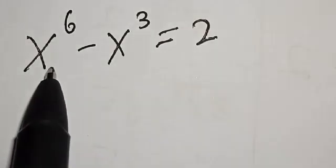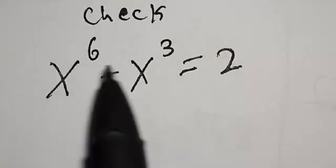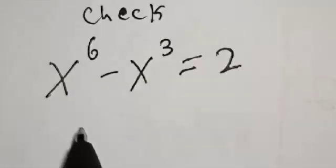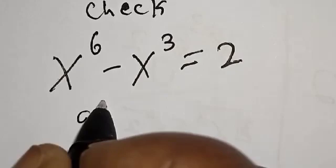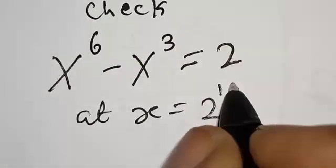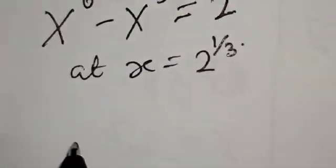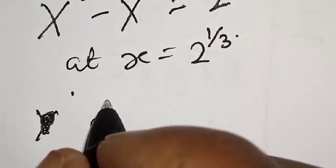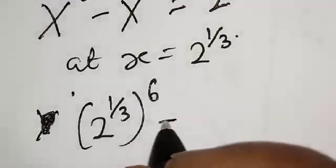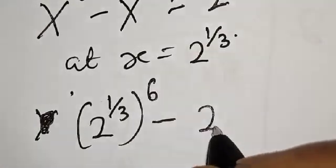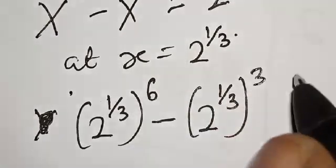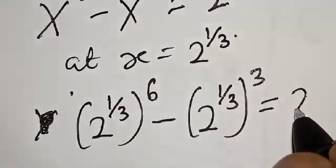Let's check to confirm if our answers are right. We have the given equation s raised to power 6 minus s raised to power 3 is equal to 2. At s equal to 2 raised to power 1 over 3, we have 2 raised to power 1 over 3, raised to power 6, minus 2 raised to power 1 over 3, raised to power 3, and this must equal 2.